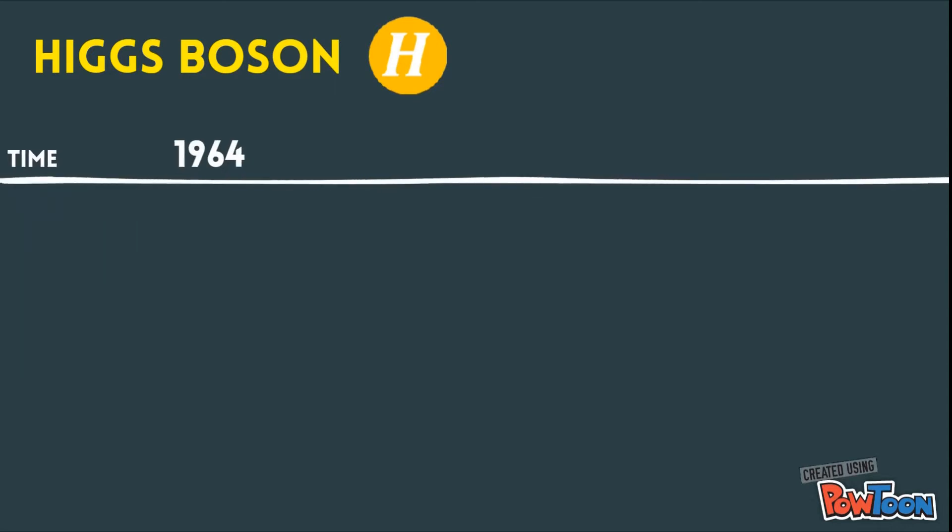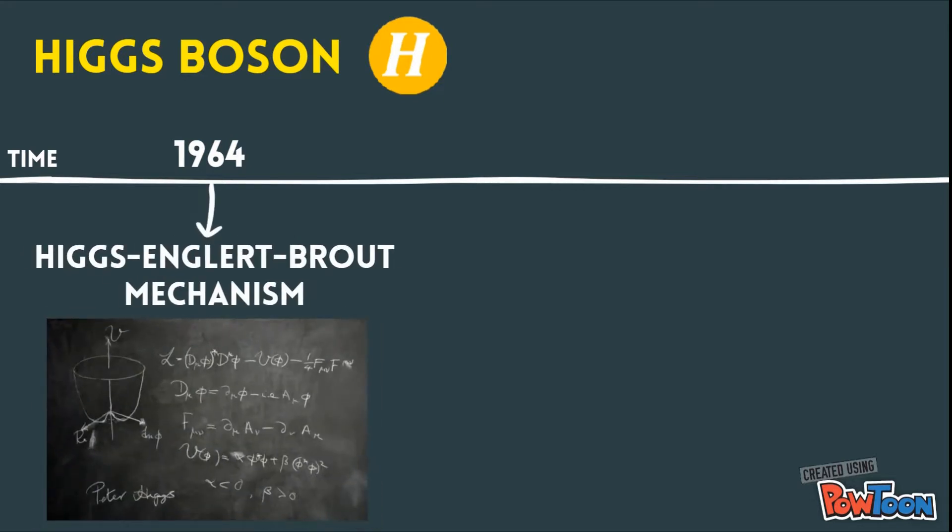Its existence was predicted in 1964 by Peter Higgs, François Englert and Robert Brout. The underlying mechanism establishes that fundamental particles get their mass through the interactions they establish with the Higgs boson.